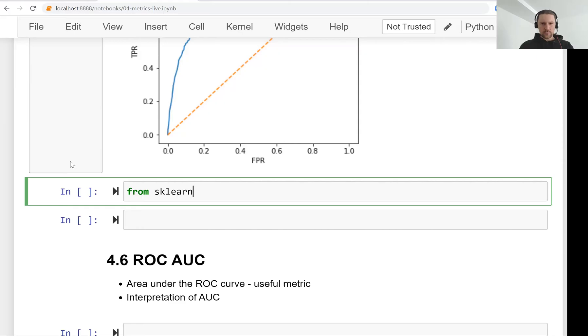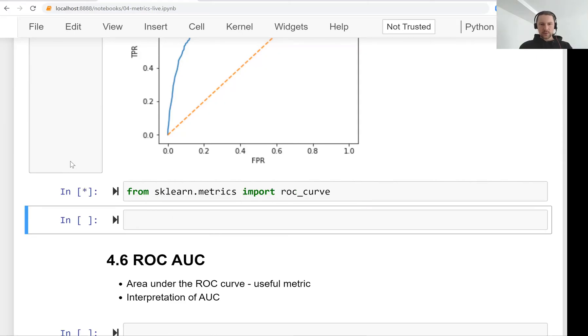It lives in the metrics package. So from sklearn.metrics import roc_curve. So I have this roc_curve function.